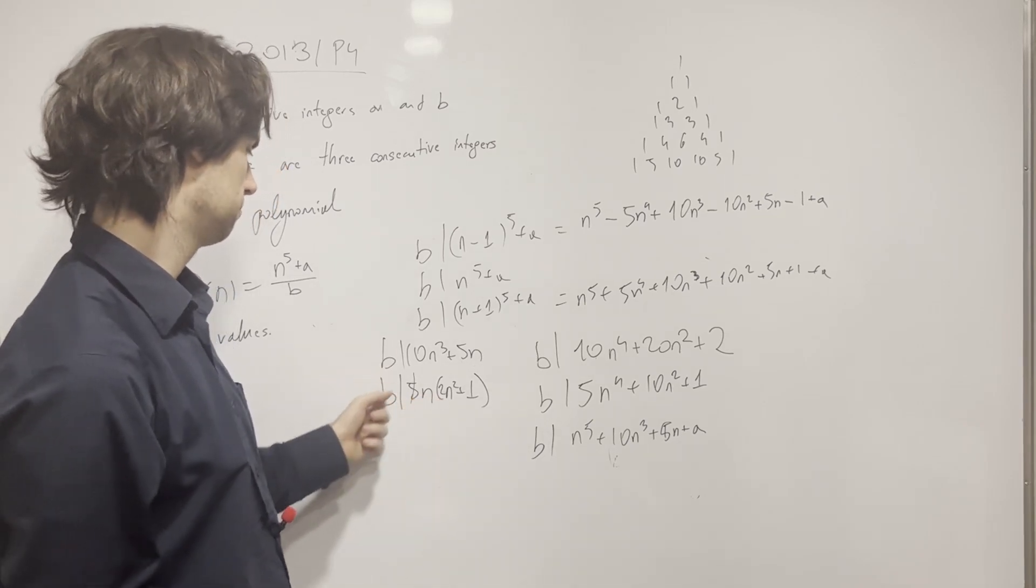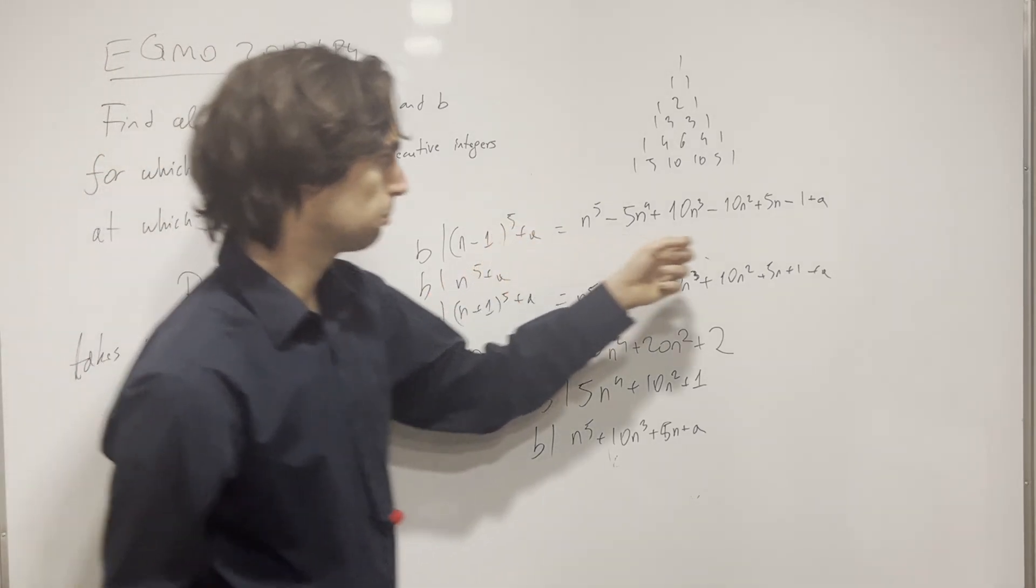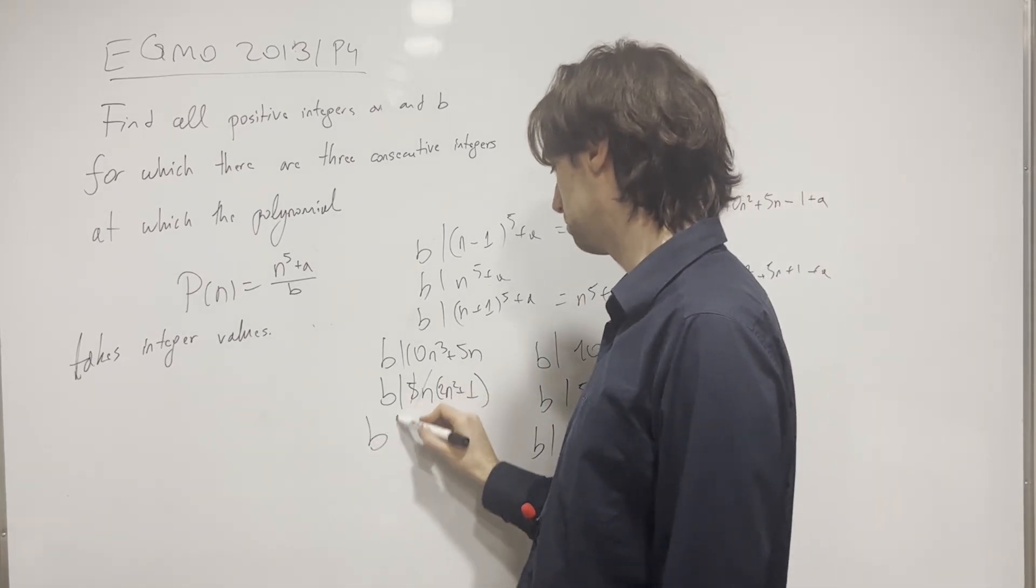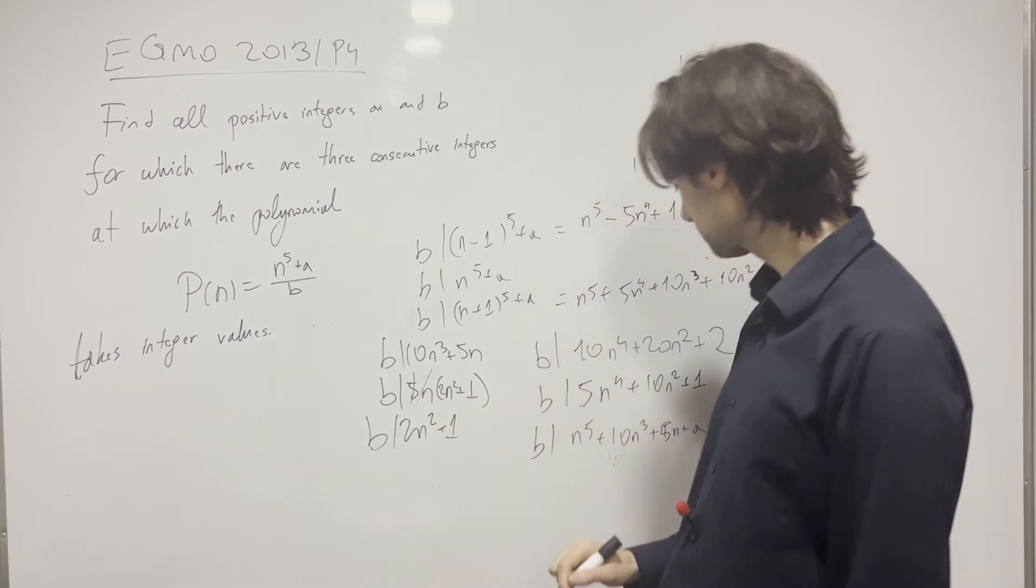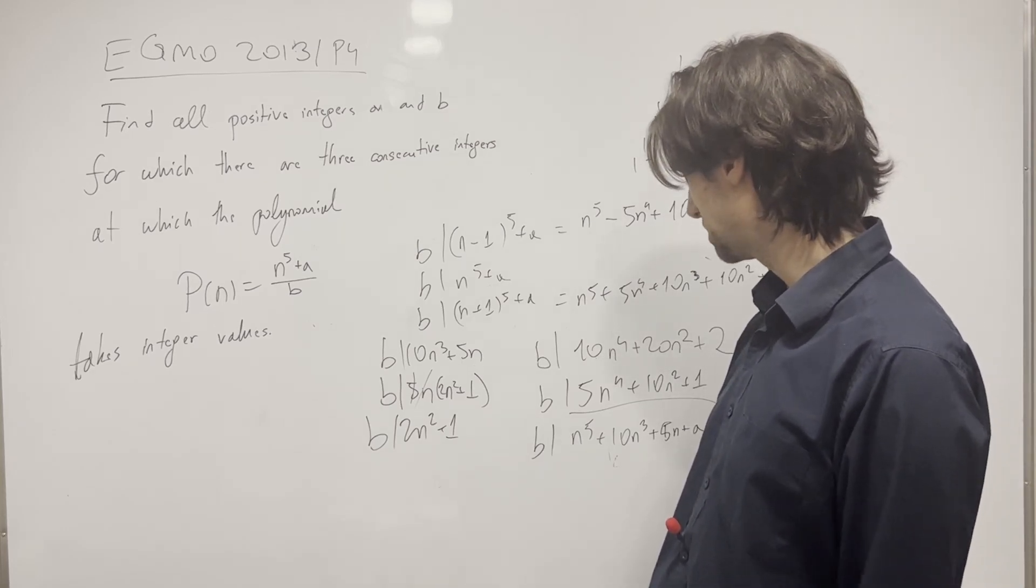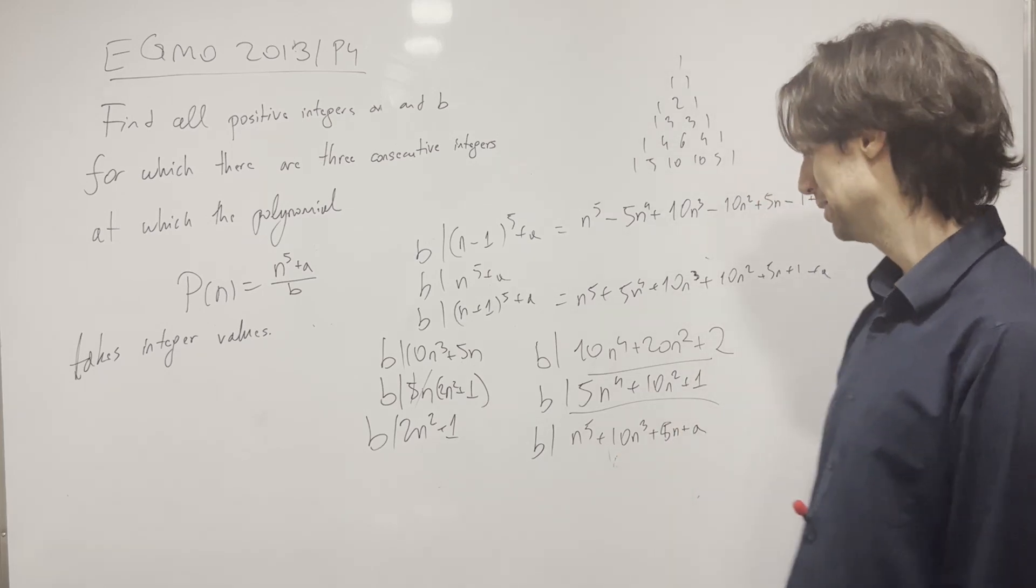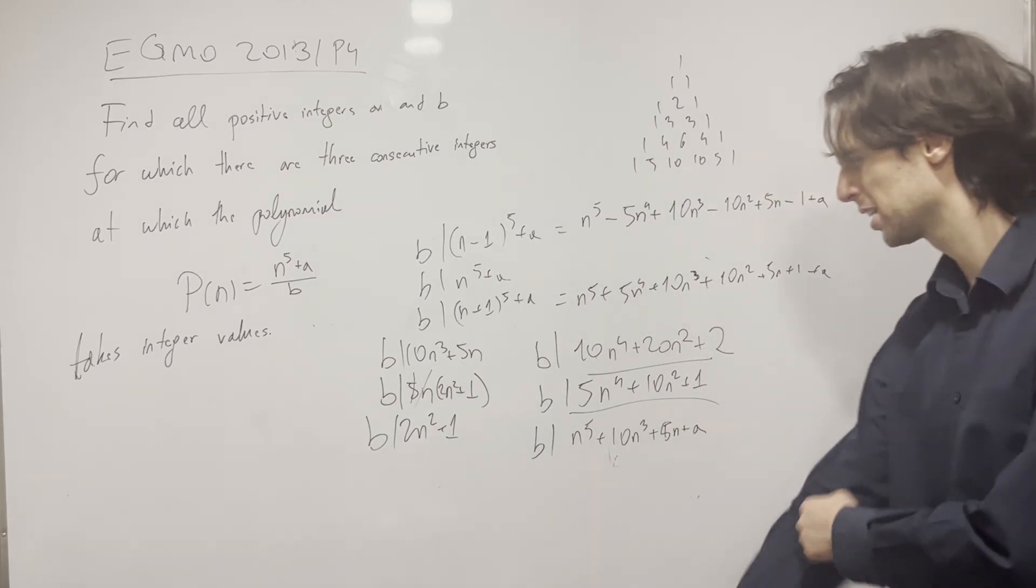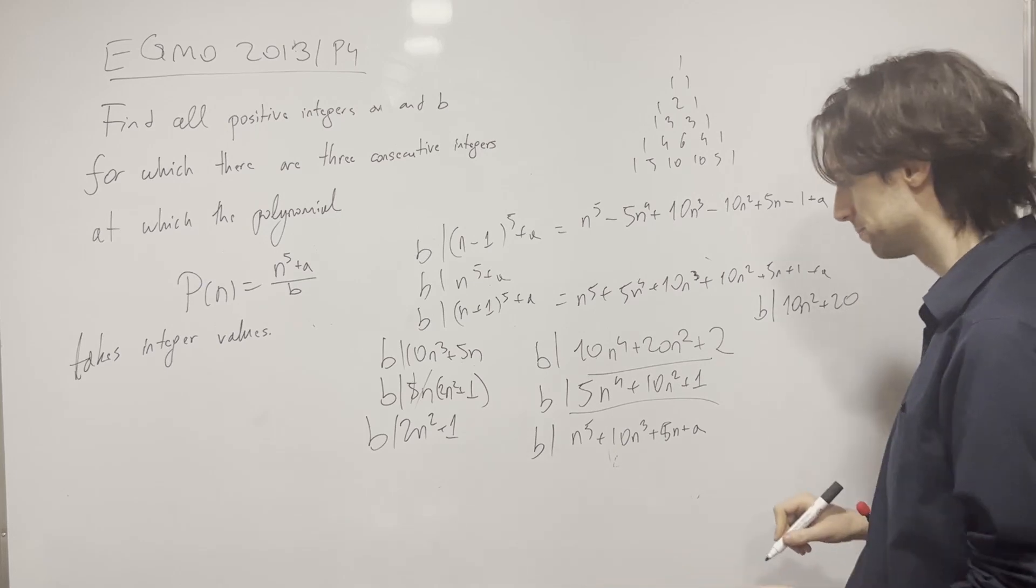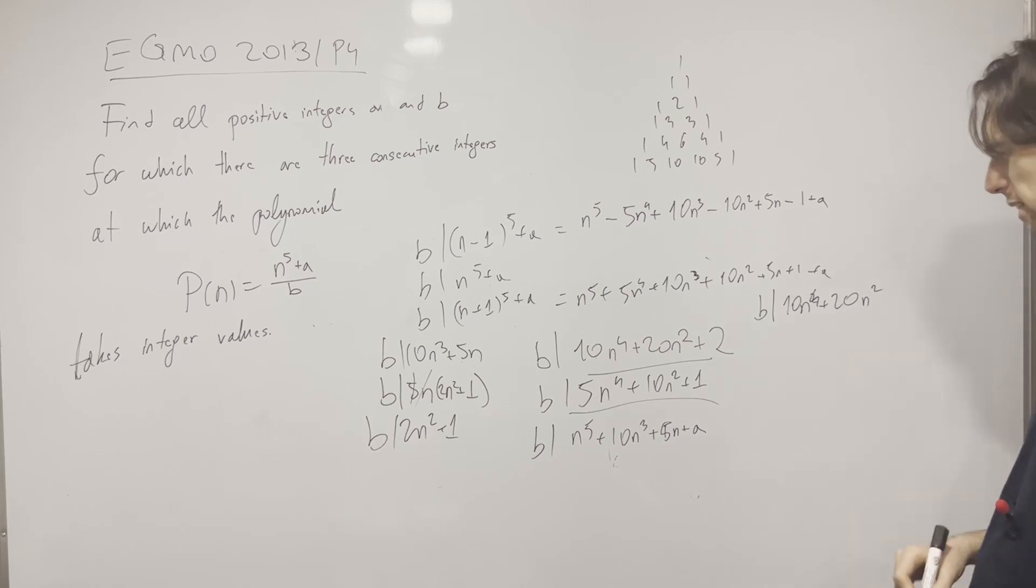So b and 5 have nothing in common. What about b and n? If a prime divided n and then divided b, then that prime would divide a, but then from here that prime would divide 1, a contradiction. So b and n also share nothing in common, and we have b divides 2n^2 + 1. And now we can use that here. Maybe we can use this here. We have now b divides 10n^4 + 20n^2.